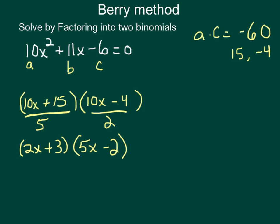So now all we need to do is set this equal to 0 and solve it. Now I've got two numbers, two parts multiplied together to give me 0. So I can set each of them equal to 0. I go 2x plus 3 equals 0 and 5x minus 2 equals 0.